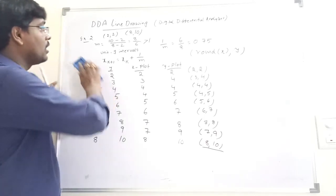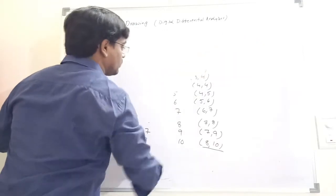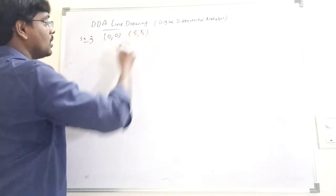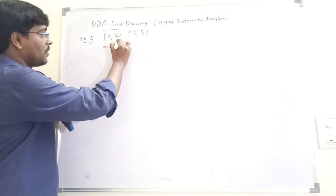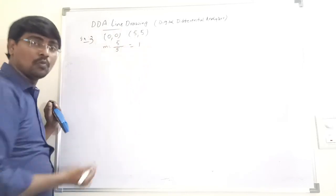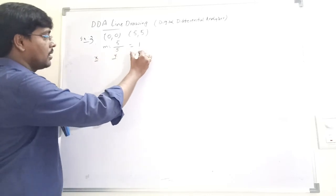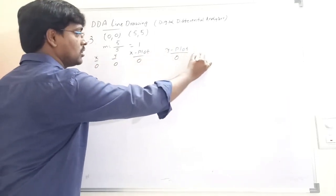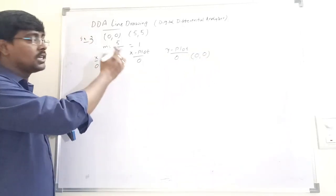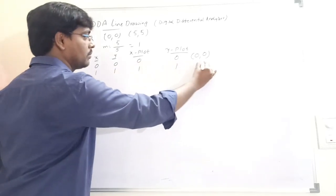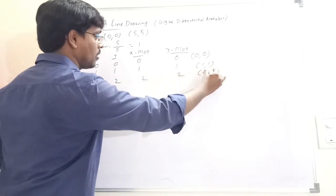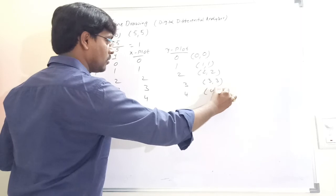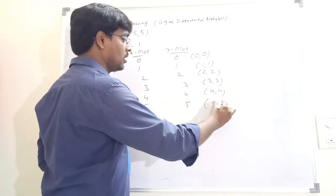Now consider Example 3 where slope equals 1. Suppose the points are (0, 0) and (5, 5). Slope m = (5-0)/(5-0) = 5/5 = 1. The table: first point (0, 0) plotted (0, 0). Each time x and y are incremented by 1: (1,1), (2,2), (3,3), (4,4), (5,5). Last point reached — stop the procedure.